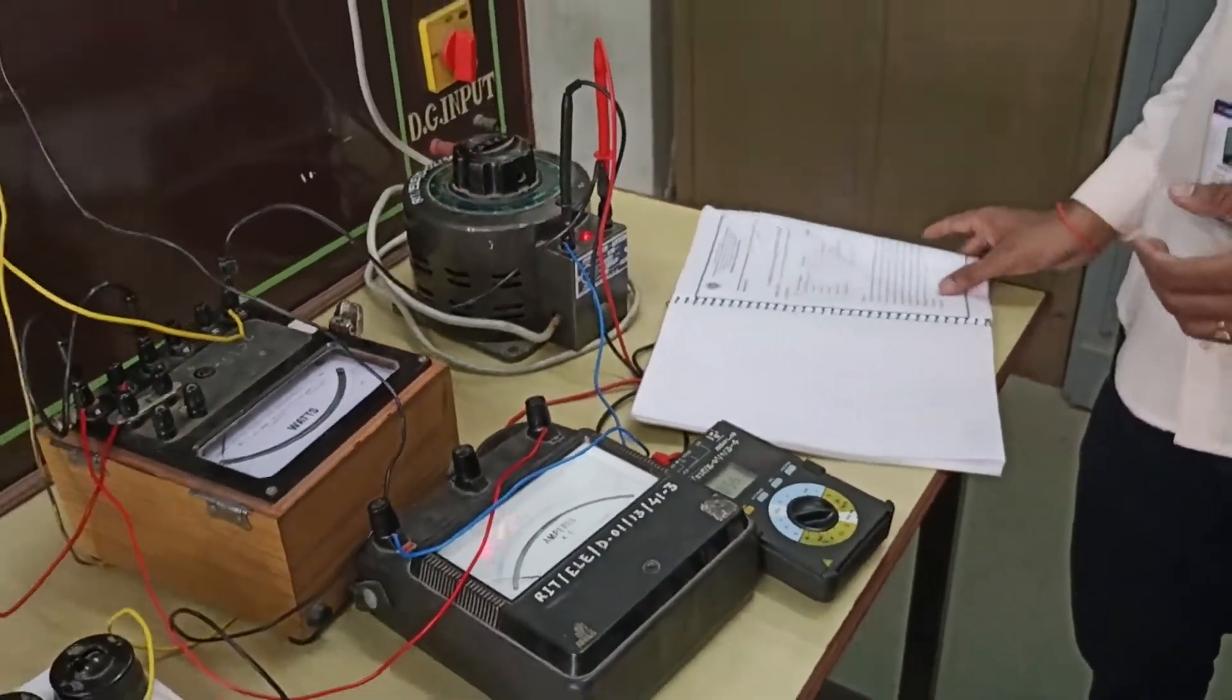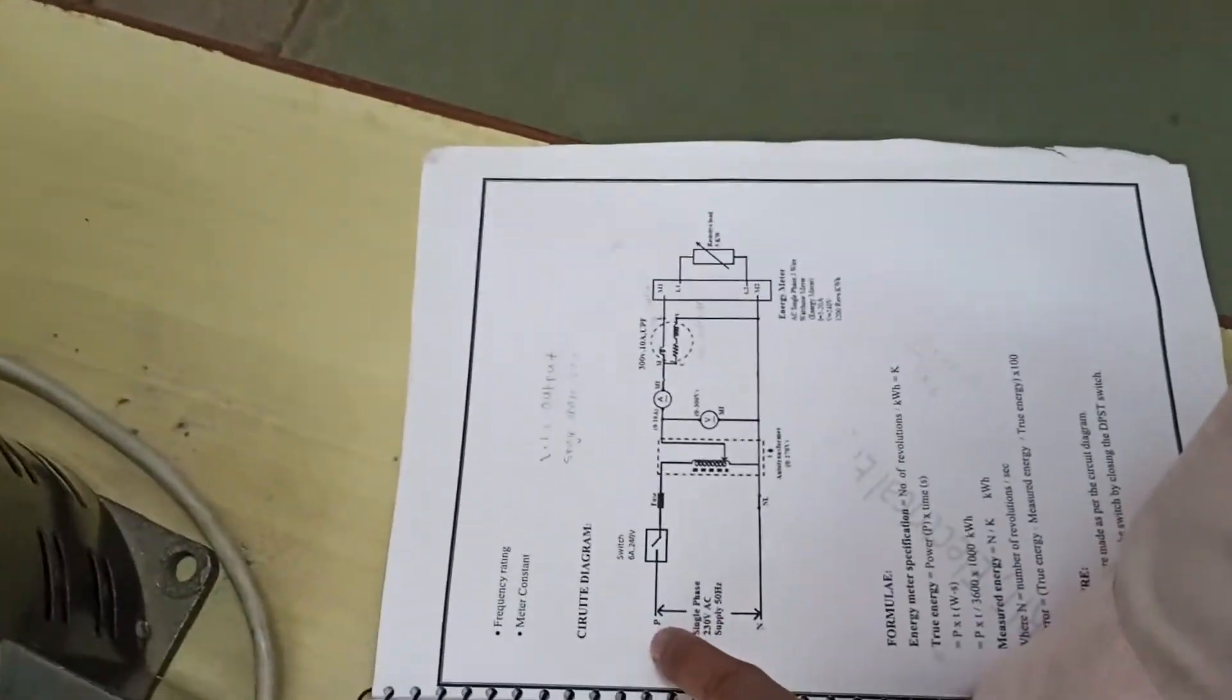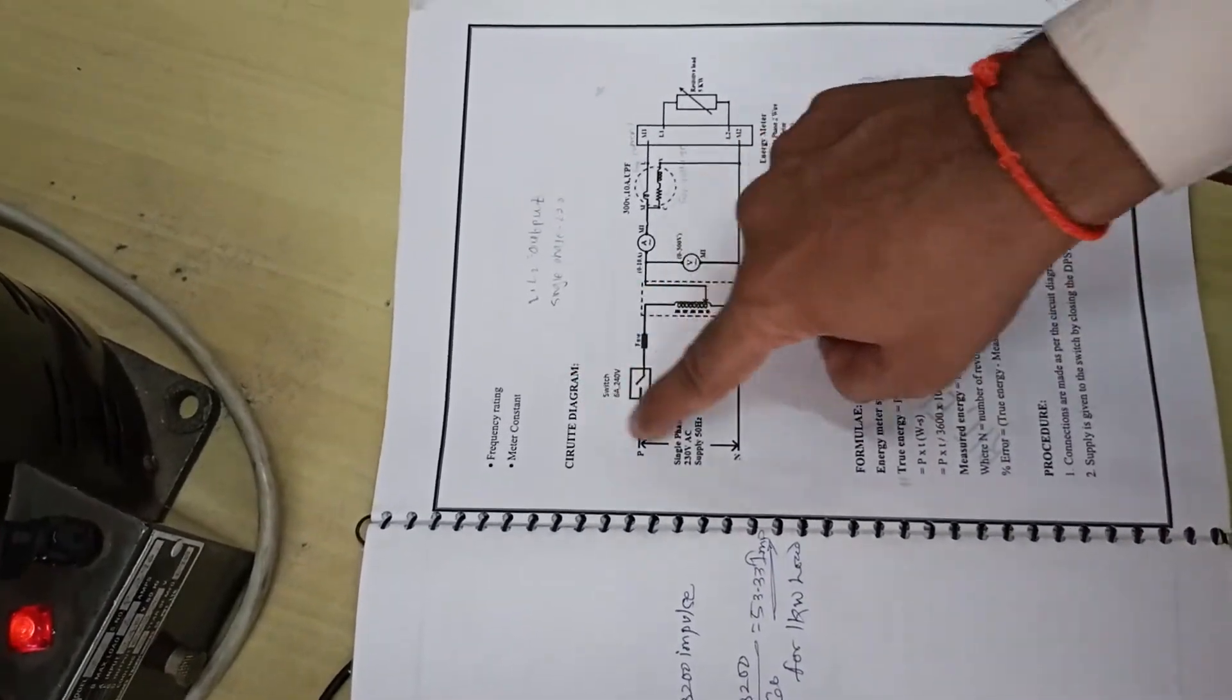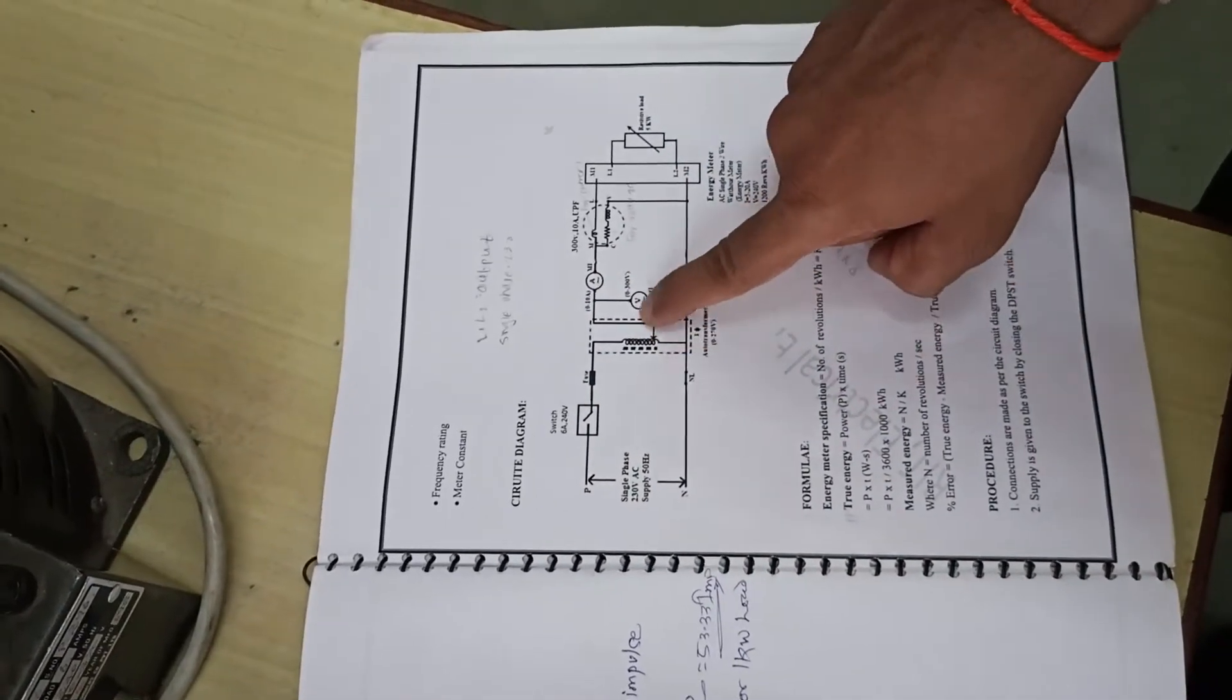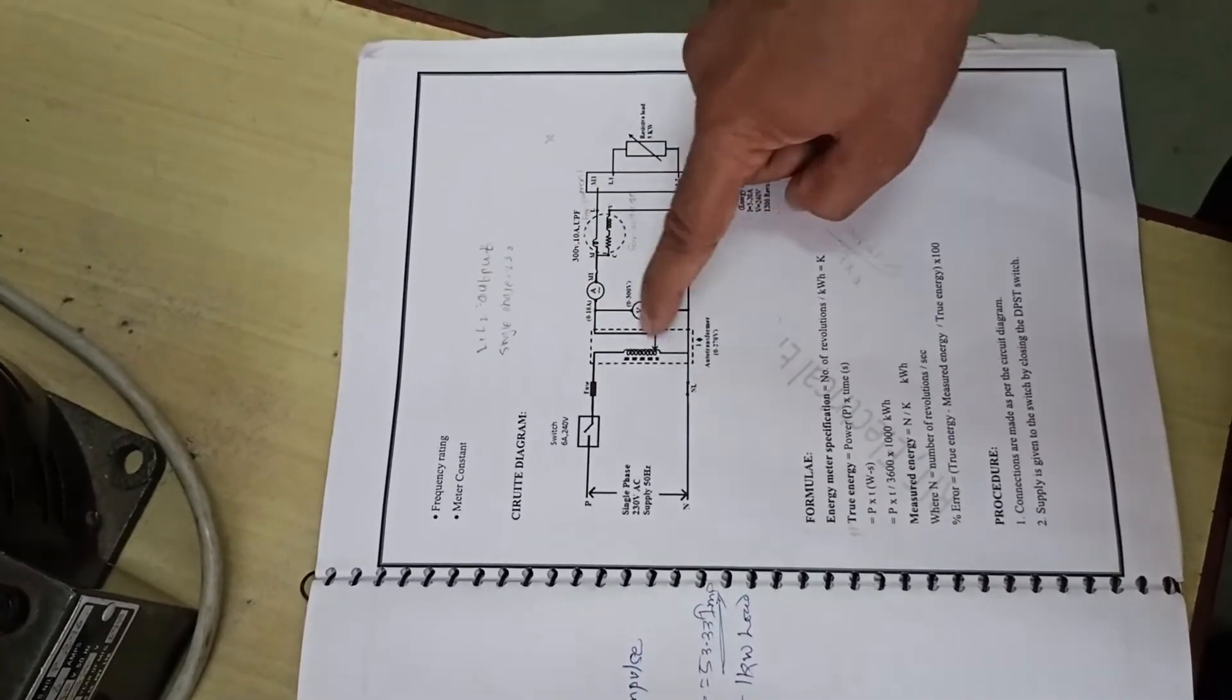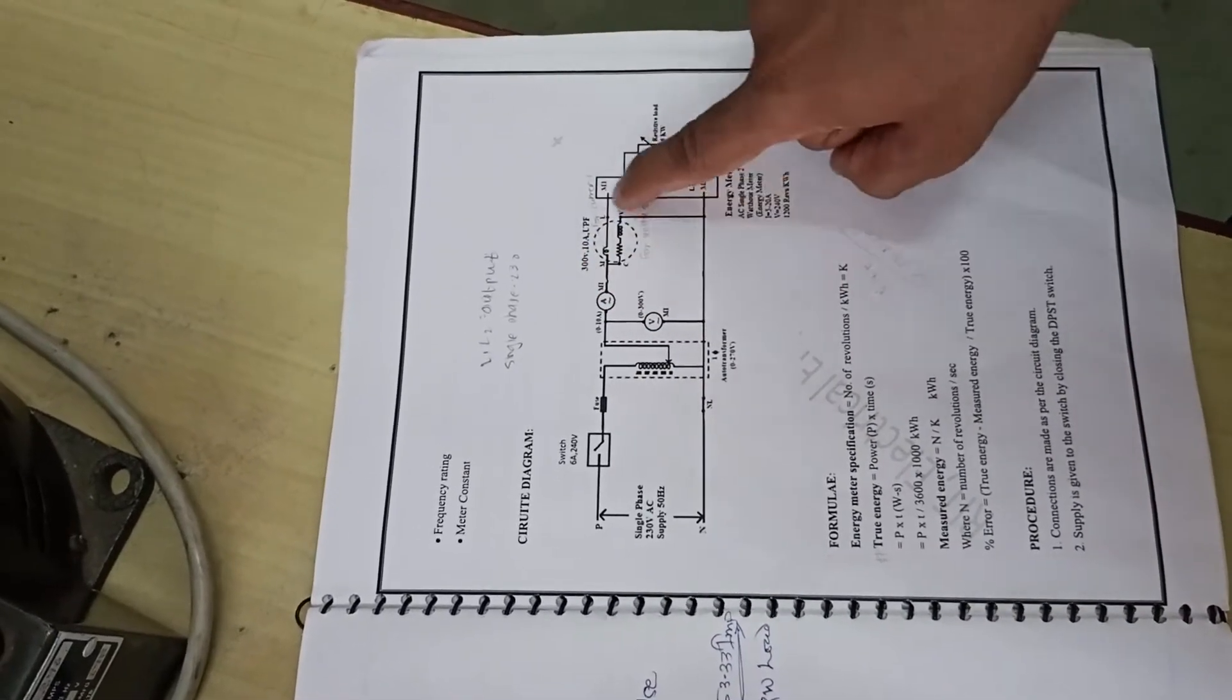This is the circuit diagram. We are having single phase 230 volt AC supply connected to a switch, protective fuse, then a variac which is connected to the ammeter of 0 to 10 ampere and here we are taking voltmeter. In place of voltmeter in practical we are using multimeter which is connected to our wattmeter.